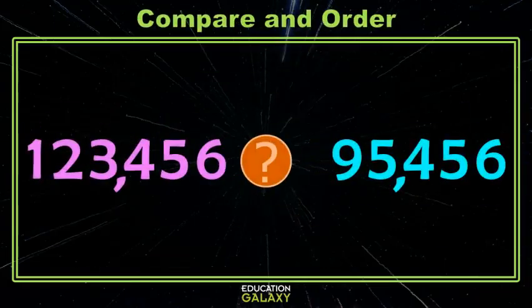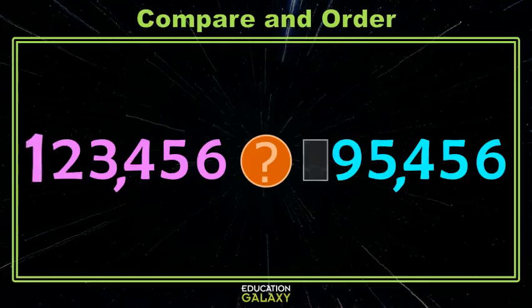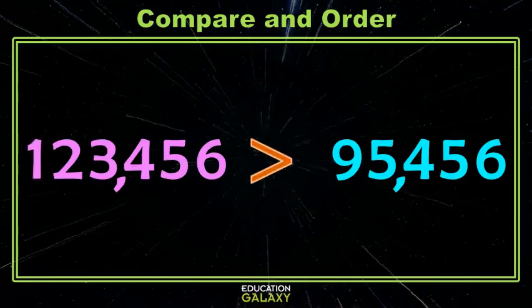Let's try another example. Here I have 123,456 compared to 95,456. When I start on the left, I have a one in the hundred thousands place, but on the right I don't have anything in the hundred thousands place. The fact that I don't have anything there is essentially nothing — a big fat zero. My one in the hundred thousands place is bigger than zero, so my number on the left is bigger.